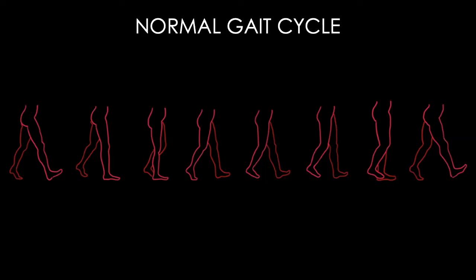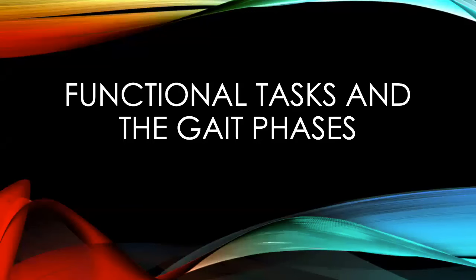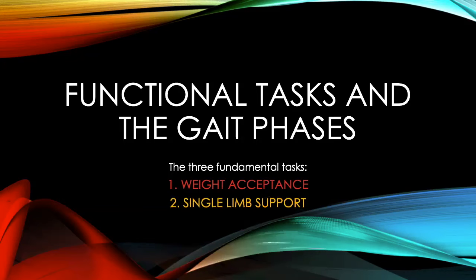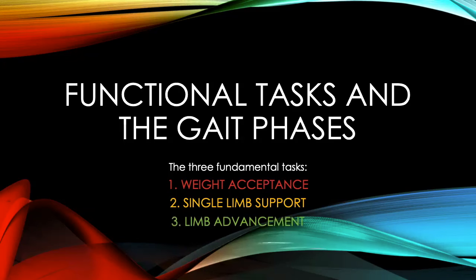Since gait is continuous, it doesn't really matter where you start, but most of the time you'll see people starting with initial contact for ease. It's a pretty noticeable phase and it's a good point to get your mind wrapped around what's happening. During gait there are a few things our body has to do to keep us moving forward, and we're going to break that down into three functional tasks. The first is weight acceptance — you have to put your foot down to start accepting the weight. The next is single limb support, describing when one limb is responsible for all weight-bearing. And last, we have to move our leg forward to progress to the next gait cycle.